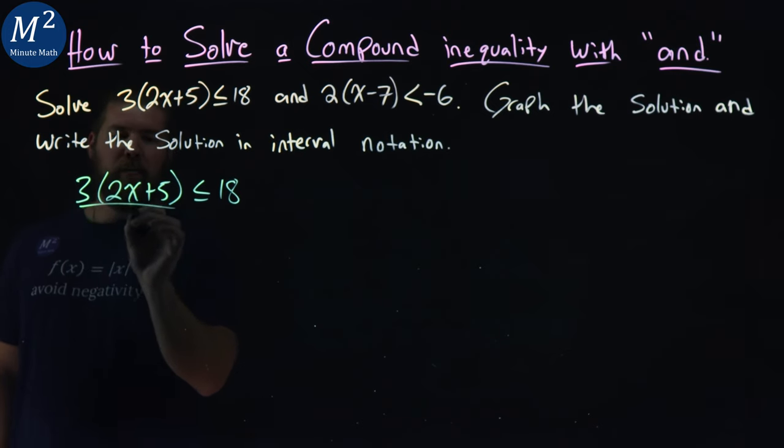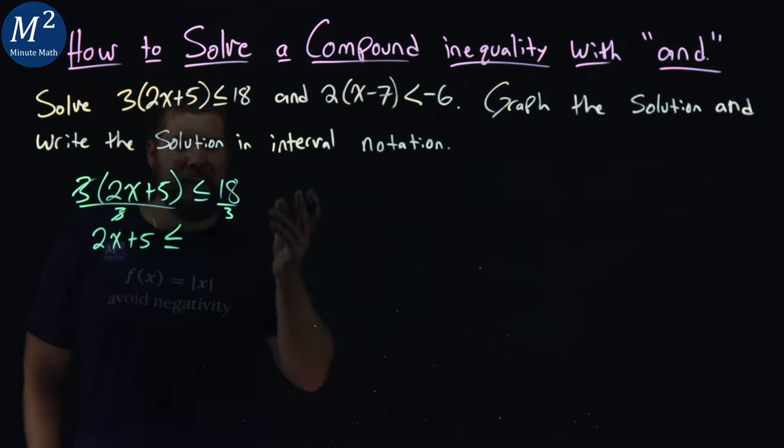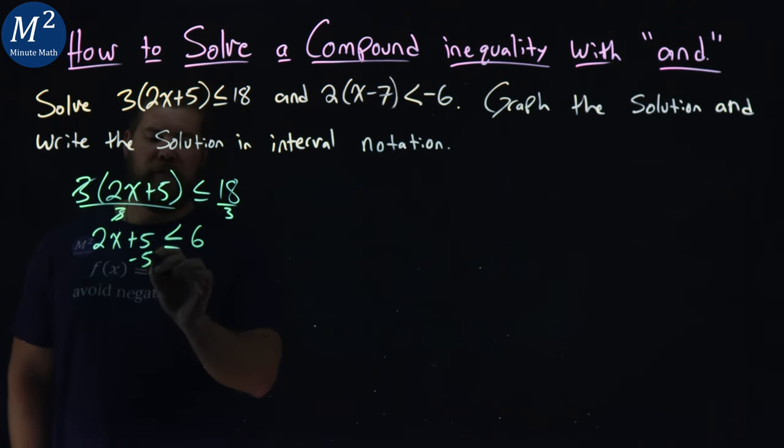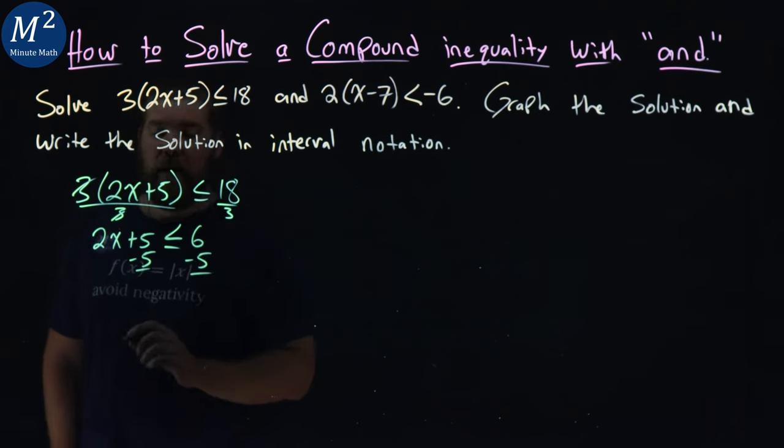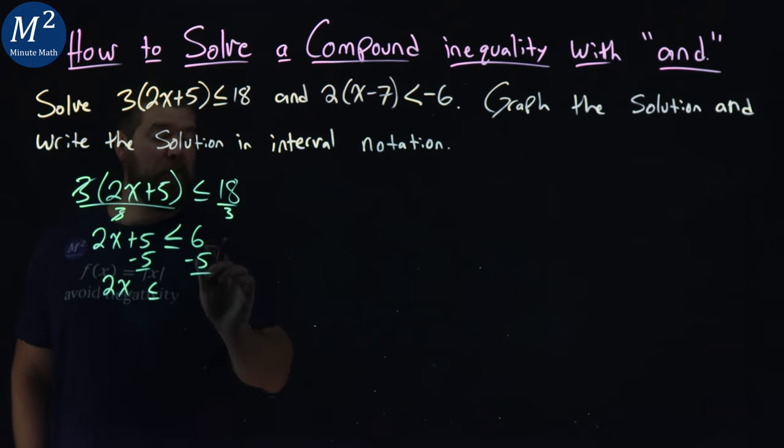So I'm going to divide both sides by 3, and the 3's cancel. 2x+5 is less than or equal to 18 divided by 3, which is 6. From there, subtract 5 from both sides, and we have 2x is less than or equal to 6 minus 5, which is 1.